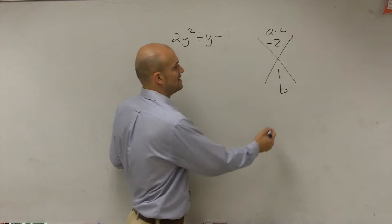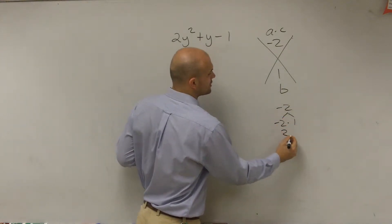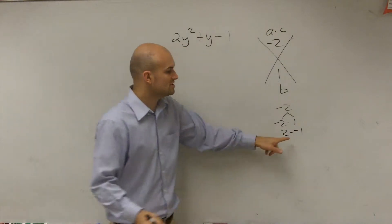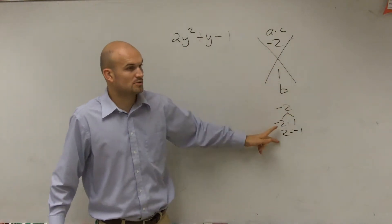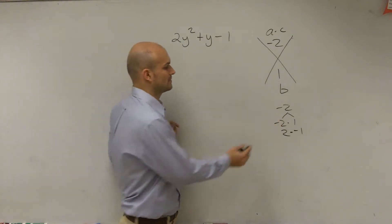Oh yeah, negative 2 and 1. Right. You can be negative 2 times 1, or you can be 2 times negative 1. But which one of these multiply to give me negative 2, and what is the only combination that add up to give us 1? 2 minus 1.